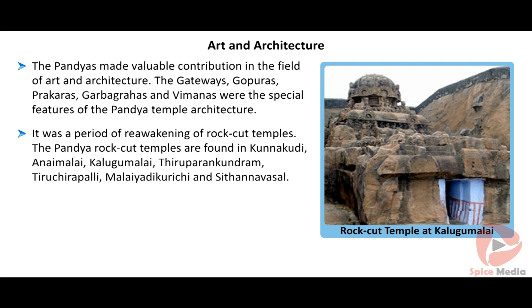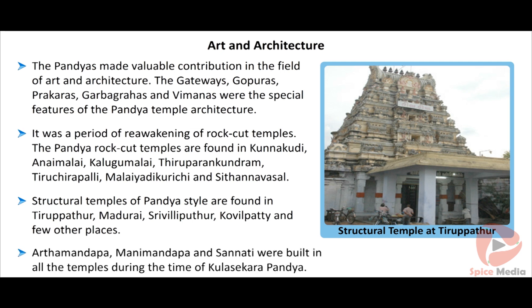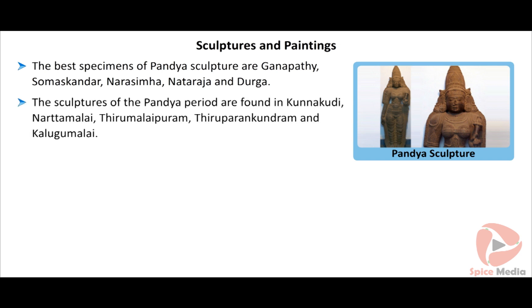The Pandyas made valuable contributions in the field of art and architecture. Gateways, Gopuras, Prakaras, Garbhagrahas and Vimanas were the special features of Pandya temple architecture. It was a period of reawakening of rock-cut temples. Pandya temples are found in Kunnakudi, Annai Malai, Kalugu Malai, Tiruparan Kundram, Trichirapalli, Malayadi Kuruchi and Sitanavasal — about 50 rock-cut temples in these places. Structural temples of Pandya style are found in Tirupathur, Madurai, Srivalliputthur, Kovilpatti and few other places. Arthamandapa, Manimandaba and Sanati were built in all the temples during the time of Kulasekaran Pandya.